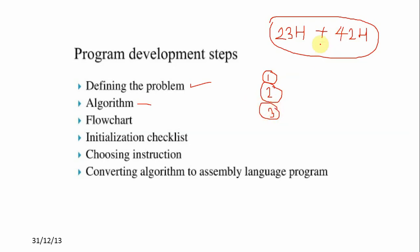What is the algorithm? First, choose the data. For example: step one, choose the number 23h; step two, choose the number 42h; step three, add these two numbers. This step-by-step method written in general English language is called the algorithm.